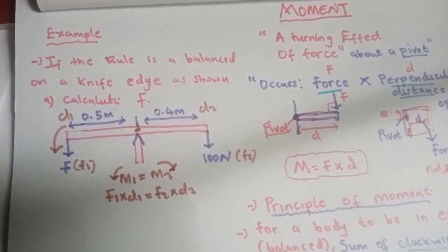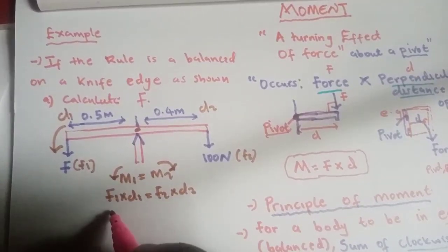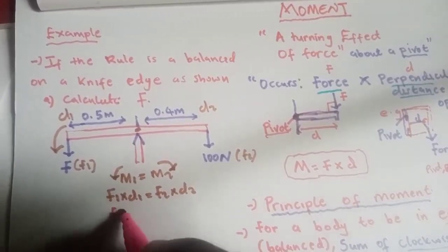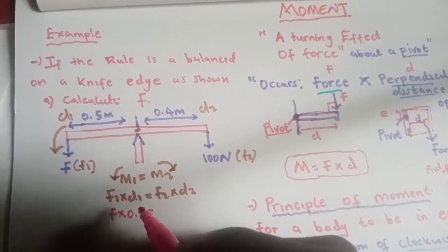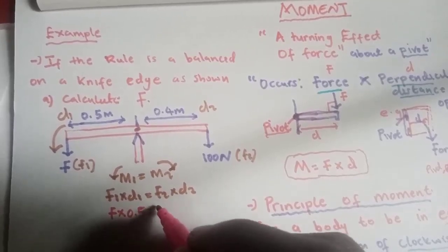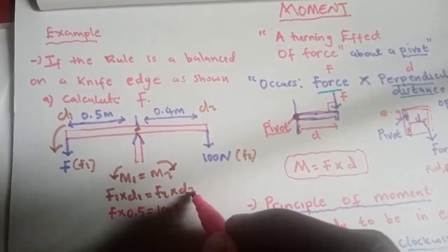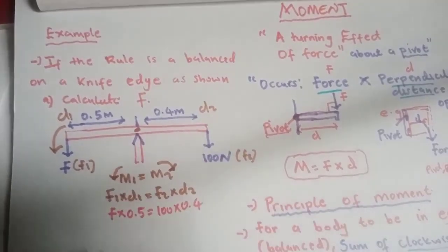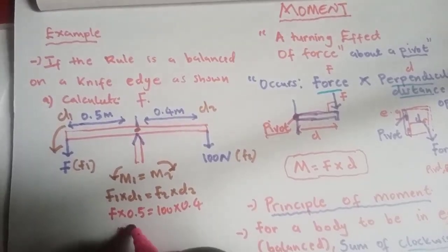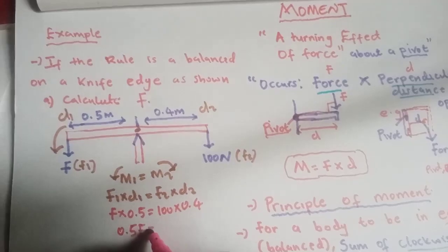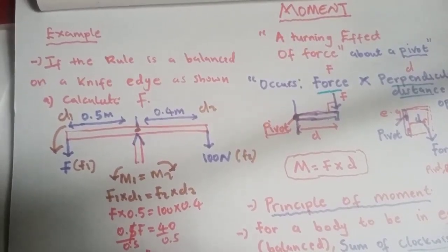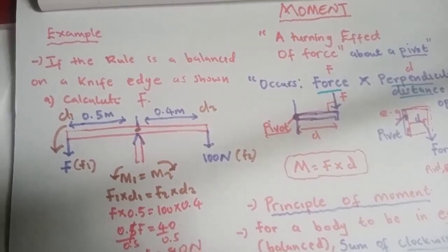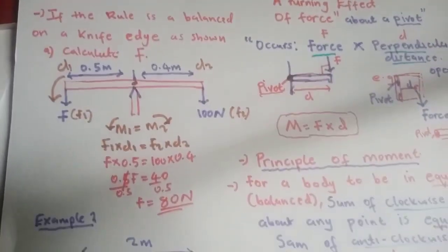Multiplying: 0.5F = 40. Dividing both sides by 0.5, F equals 80 newtons. That is the value for F.